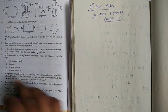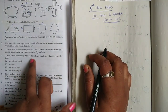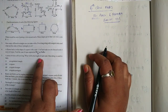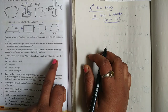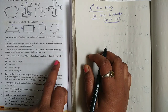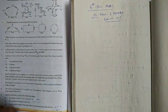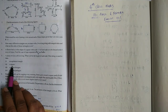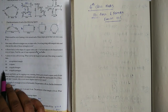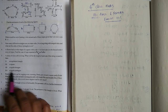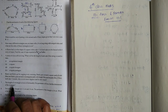A piece of wire is 60 cm long. What will be the length of each side if the string is used to form: 1st, an equilateral triangle; 2nd, a square; 3rd, a regular hexagon; 4th, a regular pentagon.